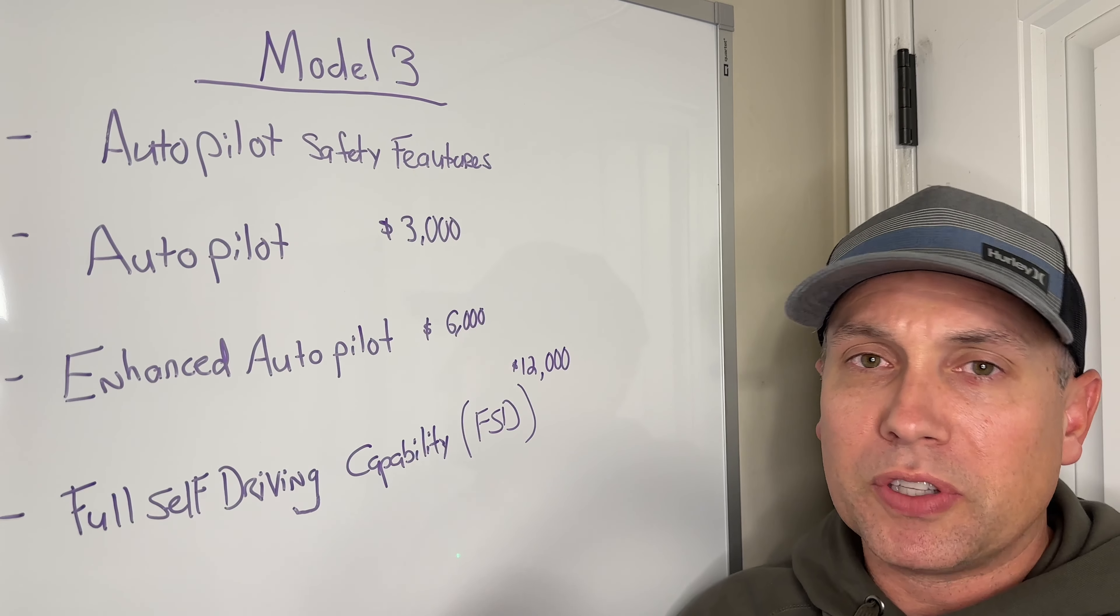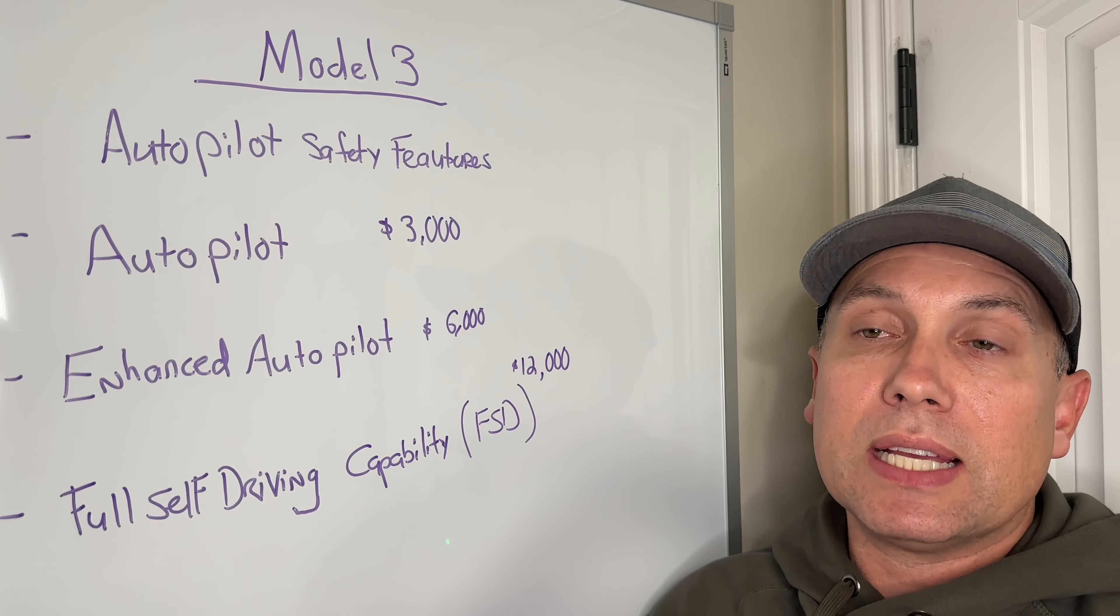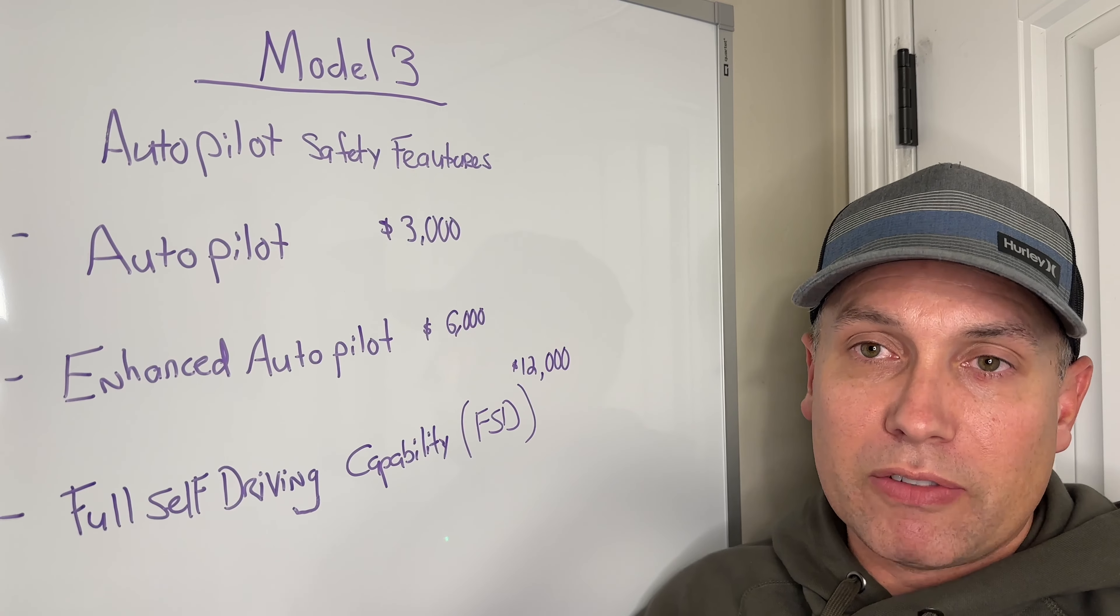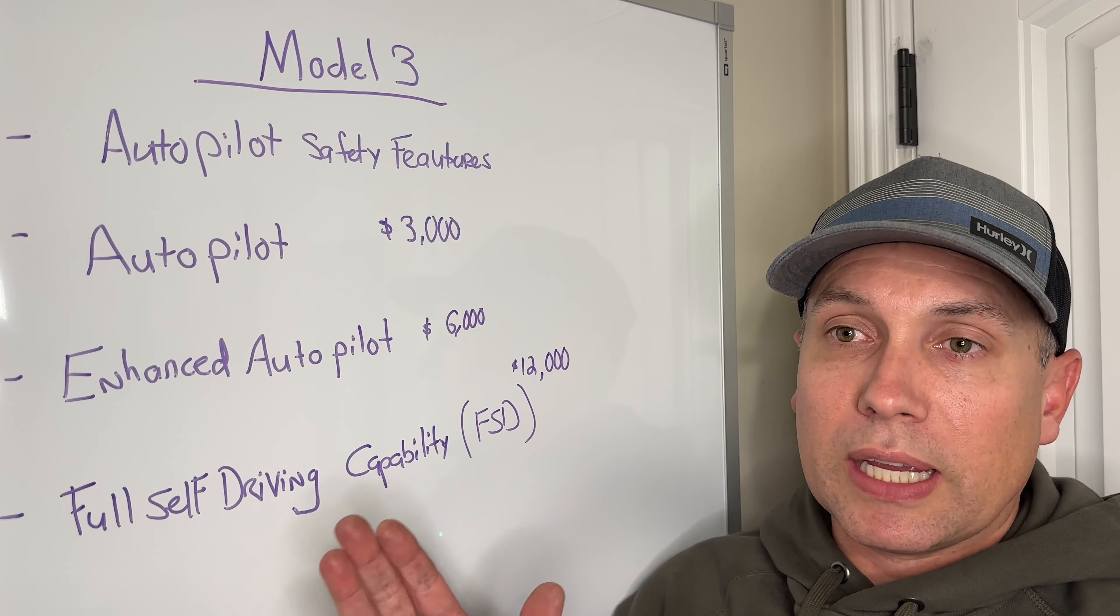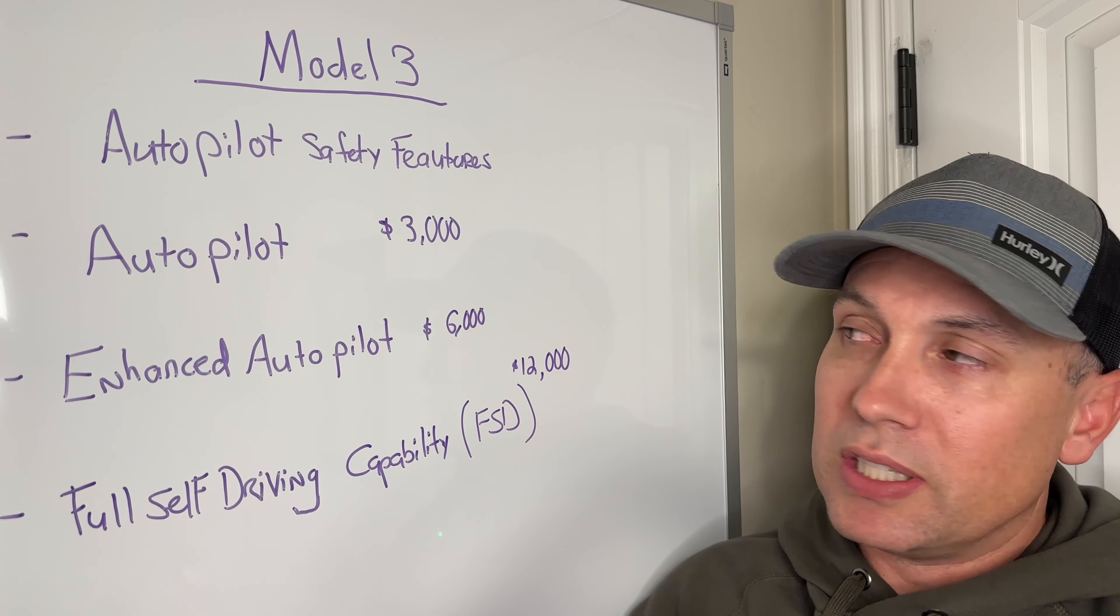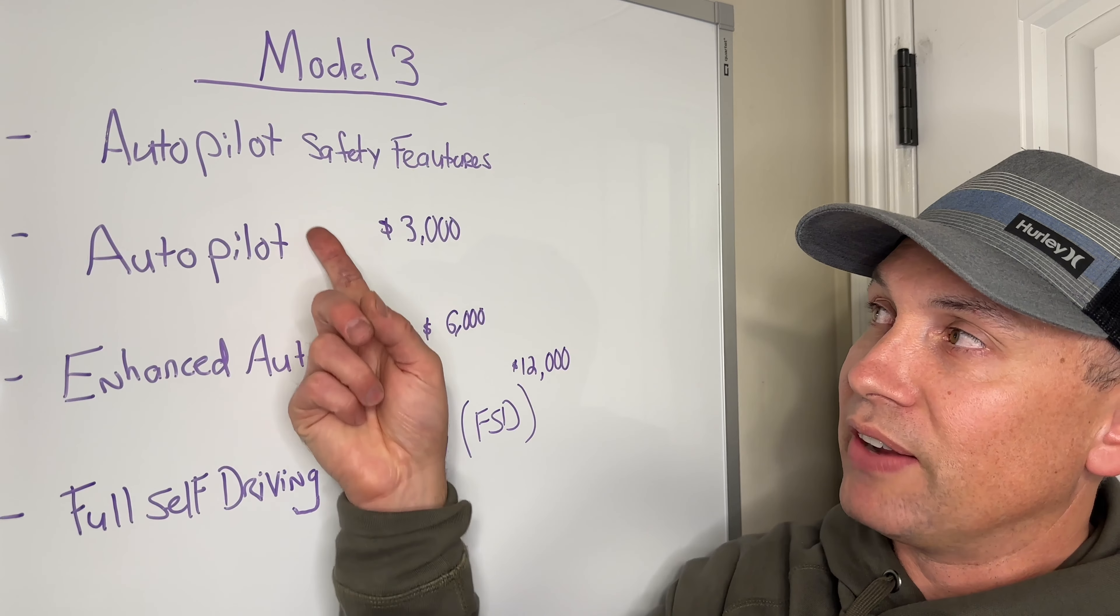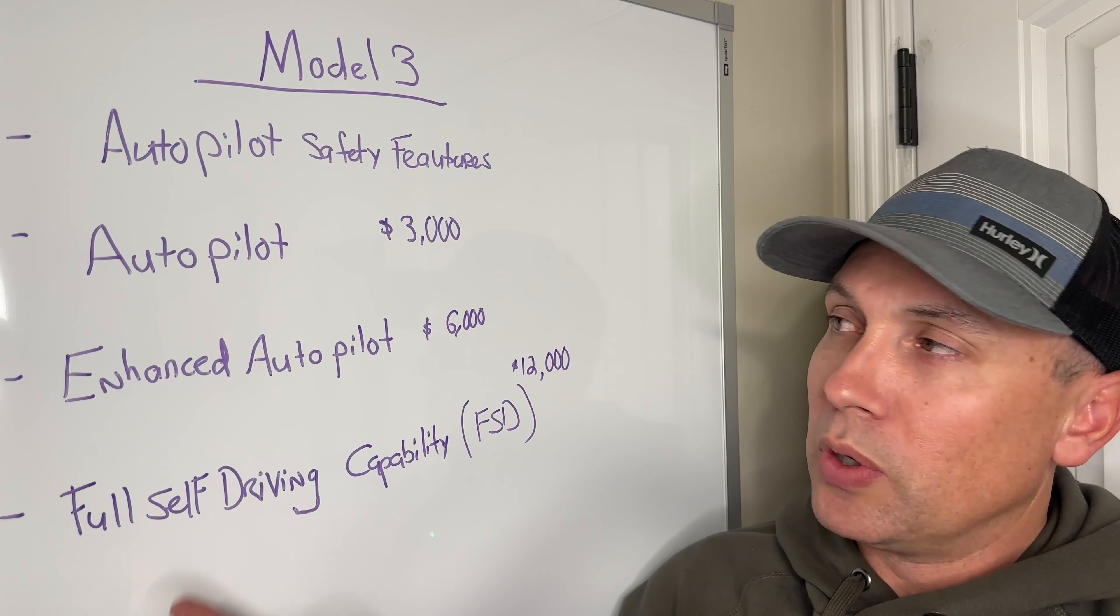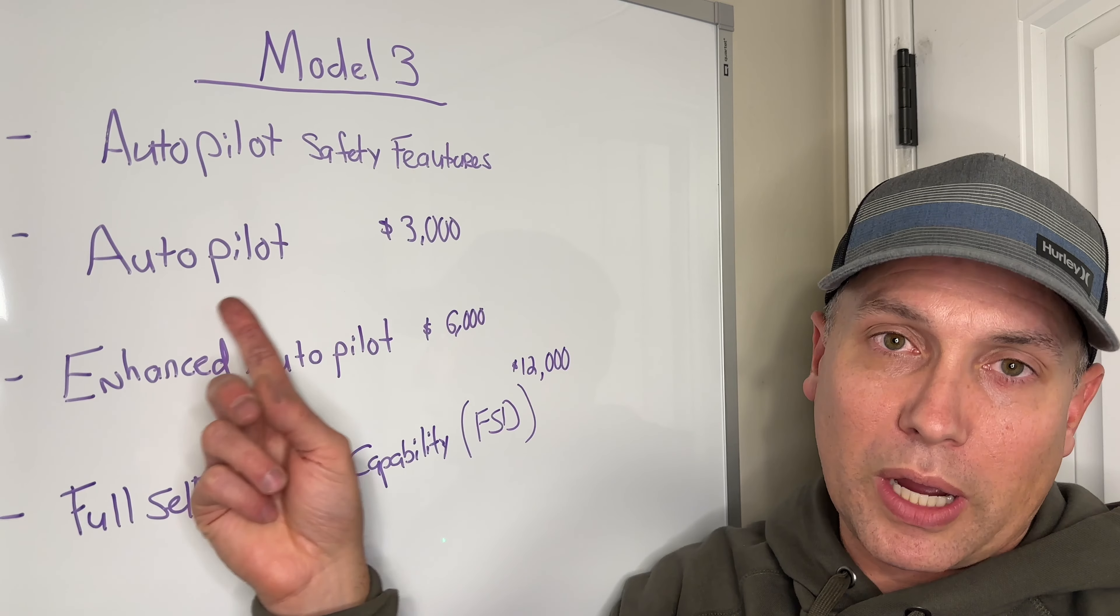Middle of like April to May 2019, Tesla started including autopilot in the cars as kind of a base feature. So a lot of cars like early 2019, all of 2018, these are the ones you're going to see that kind of have this safety features version here. So a lot of cars, 2020, 2021, you're going to see that those all have autopilot.